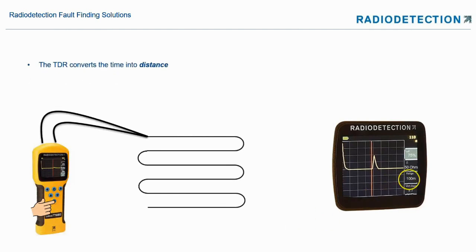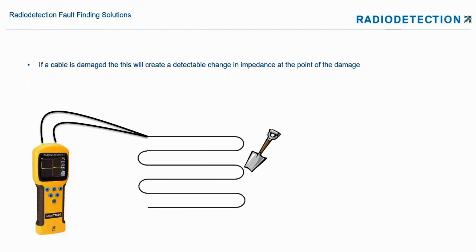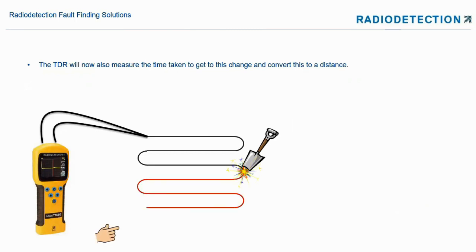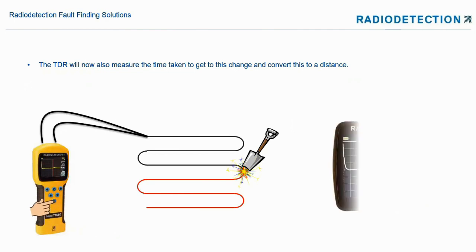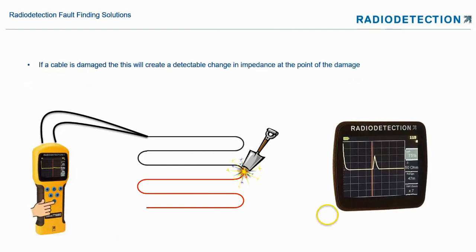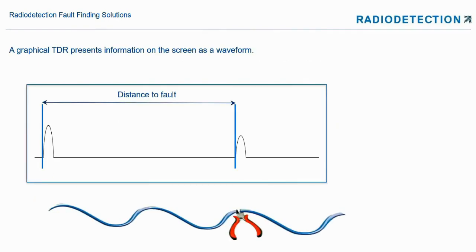The TDR converts time into distance from the velocity of propagation and the time taken, giving us a distance. If the cable is damaged, this creates a detectable change in impedance at the point of damage. When we press the start button, we get a range at which the damage has occurred — we calculate the distance to the fault and then go looking for it.